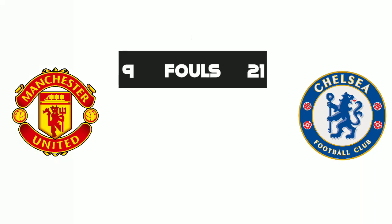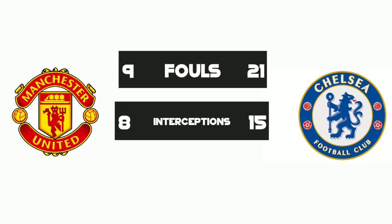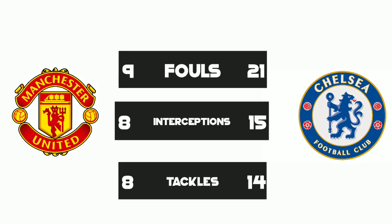That's what I'm going to highlight now — fouls, interceptions, and tackles. Manchester United had fouls while Chelsea had 9. The interceptions and tackles both went 10 each for Chelsea, showing their dominance across the 90 minutes.